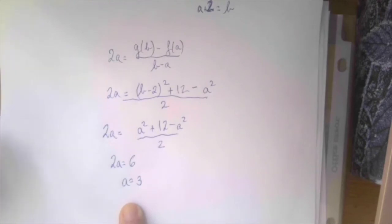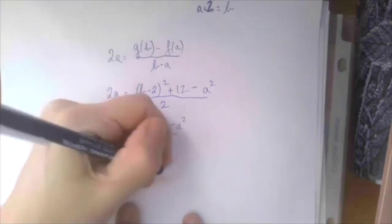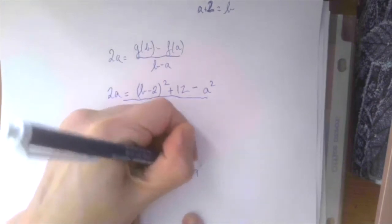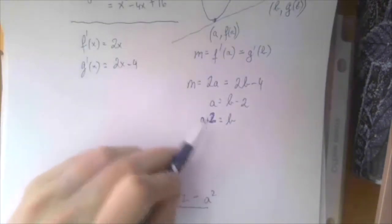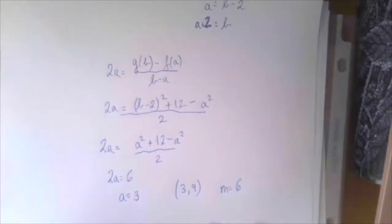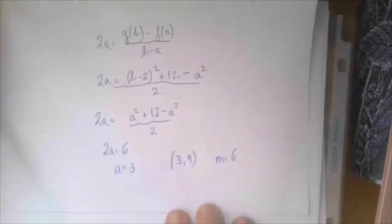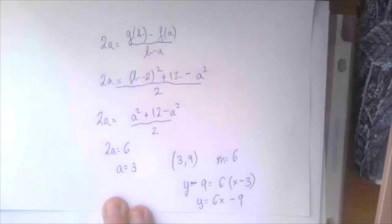That is the x coordinate of the first point of tangency. So the first point of tangency is 3, 9, and the slope, which should be 2a, is 6. So there it is, using the point slope form, y minus 9 equals 6 times x minus 3.